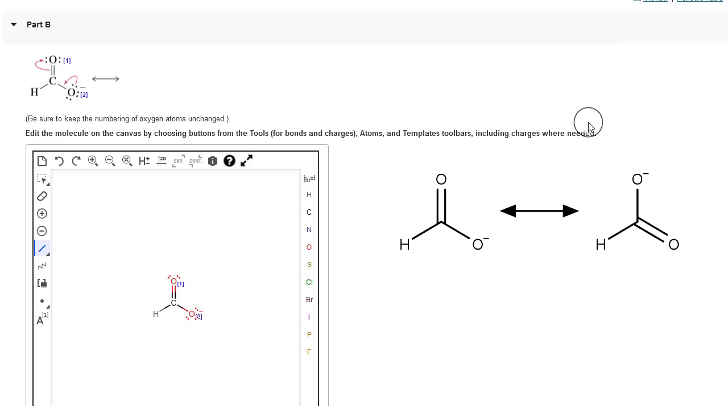So to start I'm going to zoom in a little bit, so put your mouse over the canvas and then scroll up, that'll let you zoom in. And then the first thing I'm going to do is create a pi bond between carbon and oxygen 2.